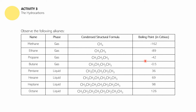I would like you to observe the following alkanes from methane to octane, noting their phases at room temperature. Methane, ethane, propane, and butane are all gaseous, while pentane to octane are liquid. These are also their condensed structural formulas. Their boiling points start from negative 162 up to positive 36, and up to 126 degrees Celsius. You may pause this video if you need more time observing.